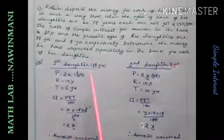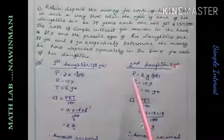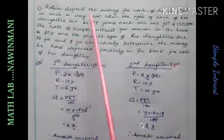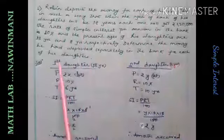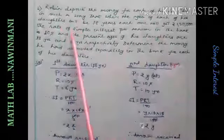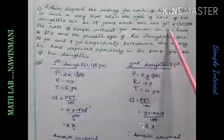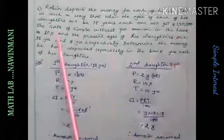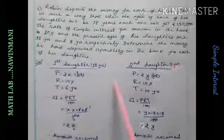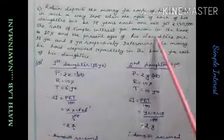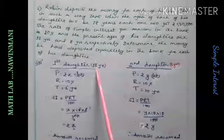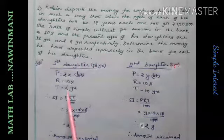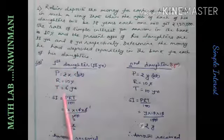This is the first question. Robin deposits money for each of his daughters in such a way that when the ages of each of the daughters will be 18 years, each one will get Rs. 1,20,000. The rate of simple interest is 10%. And the present ages of his daughters are, first daughter is 13 years. So, time for this daughter will be 5 years.